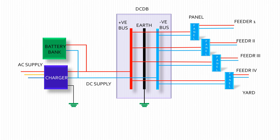The battery bank is connected with a charger and DC distribution board (DC DB). The DC DB comprises of a positive bus, negative bus, and earth or ground bus. From the DC DB, DC supply is sent to respective panels, and from panels to respective circuit breakers, isolators, transformers etc. by using LT cables.